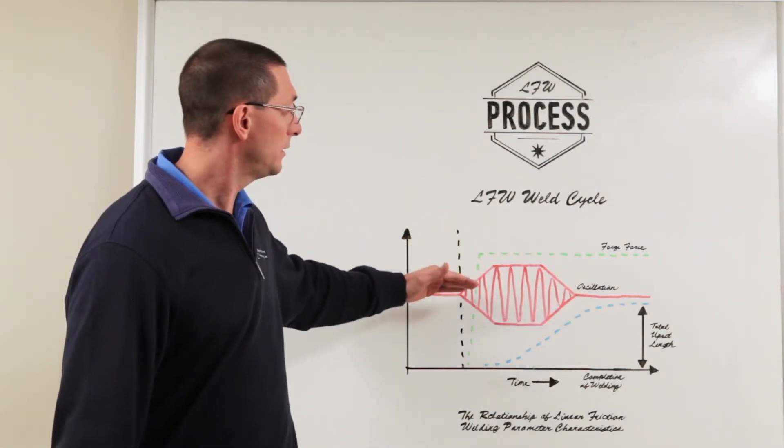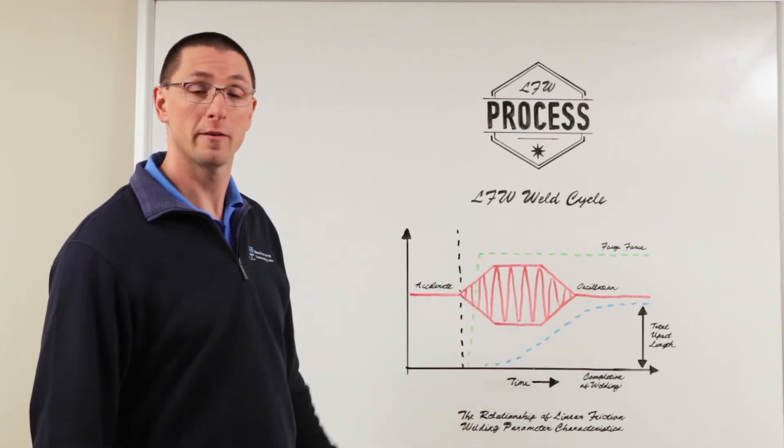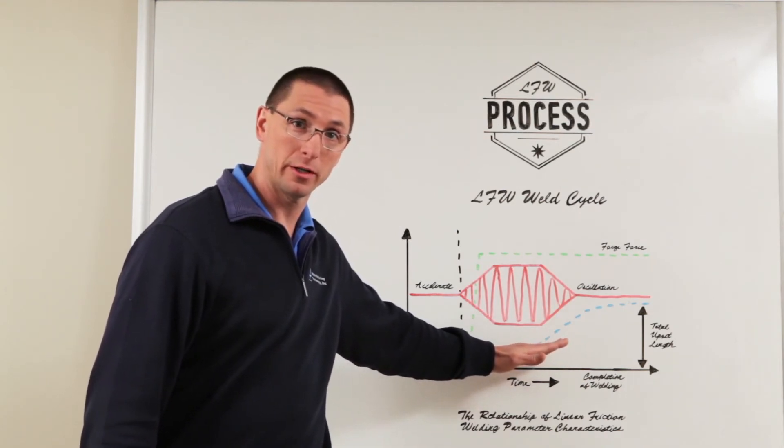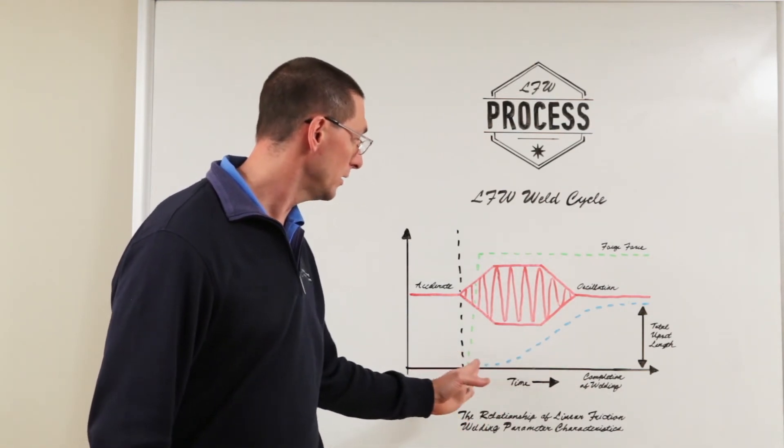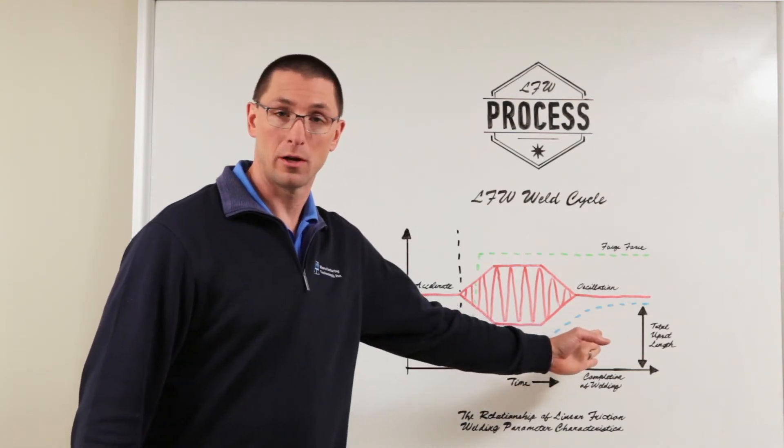Now if we wanted to we could decrease the amount of forge force that we're applying, which would change the rate of power input into the weld. It would flatten out the upset curve because we'd be converting this energy at a slower rate, and in order to hit the target amount of upset we'd have to oscillate for a longer period of time.